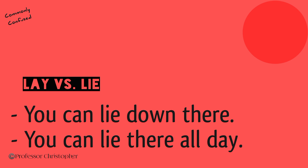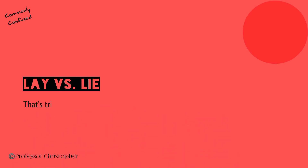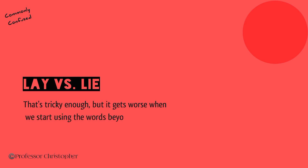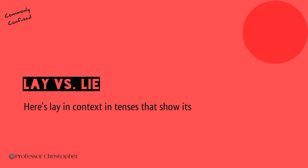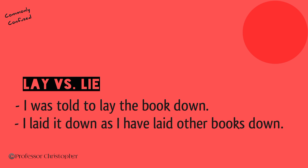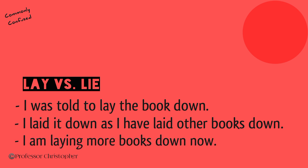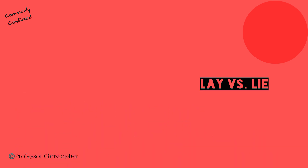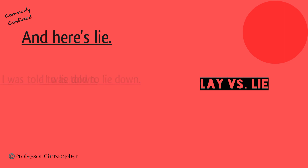That's tricky enough, but it gets worse when we start using the words beyond the now. Here's lay in context in tenses that show its principal forms: I was told to lay the book down. I laid it down, as I have laid other books down. I am laying more books down now. And here's lie: I was told to lie down.